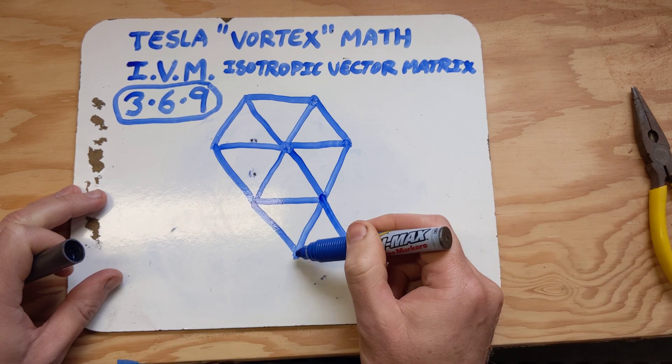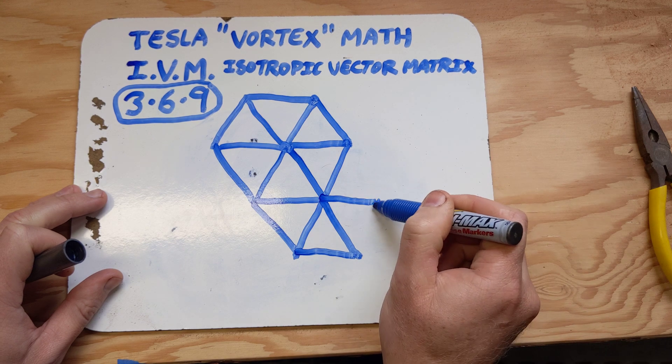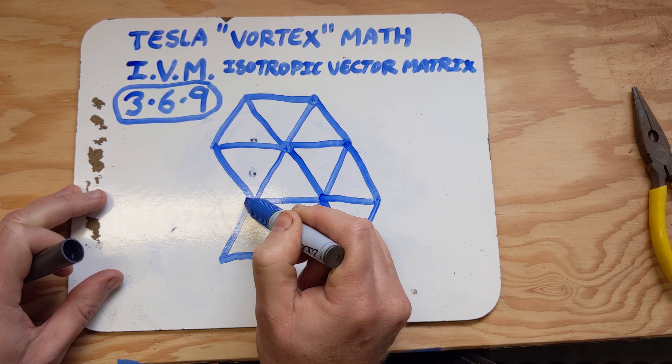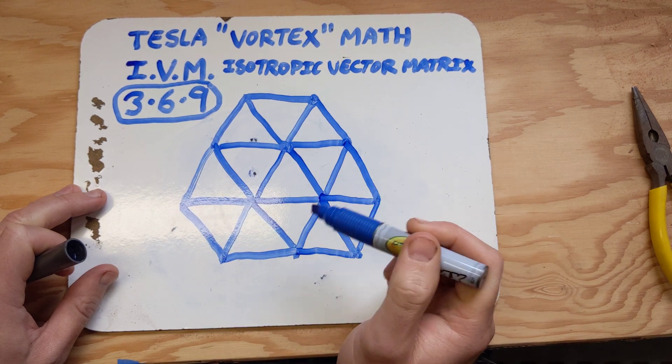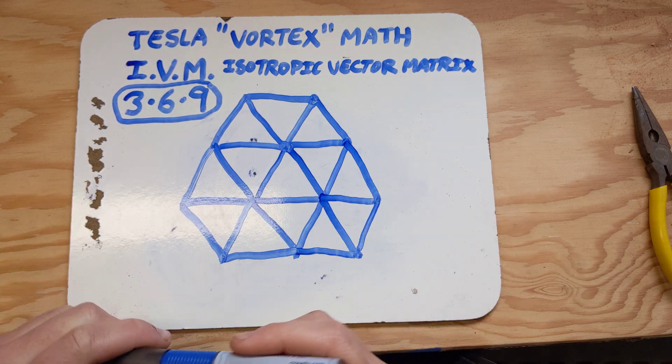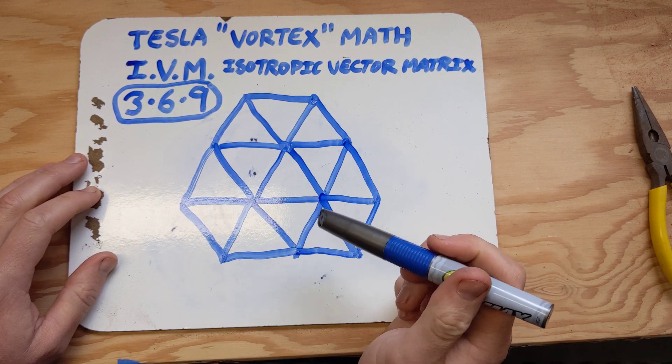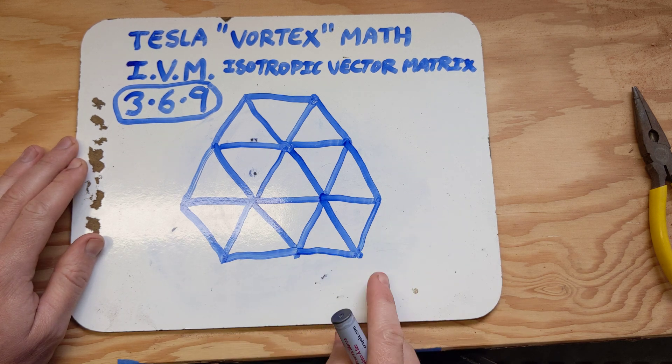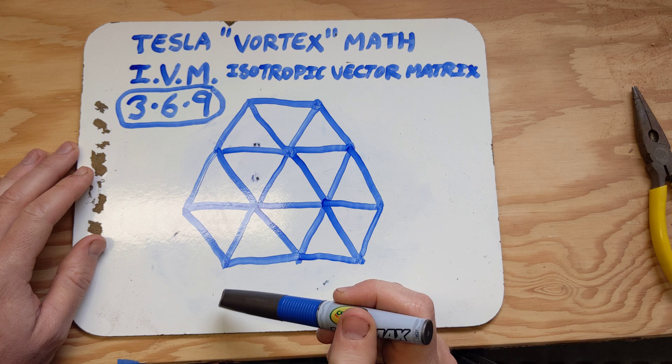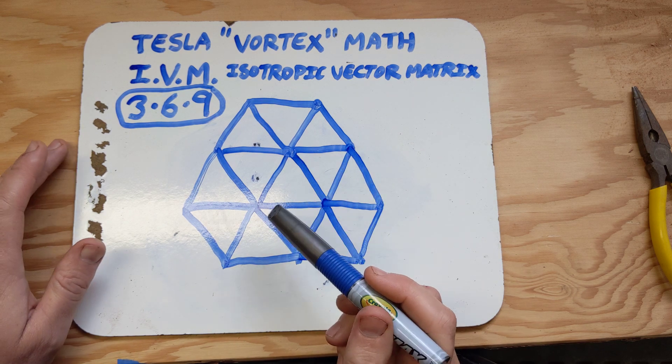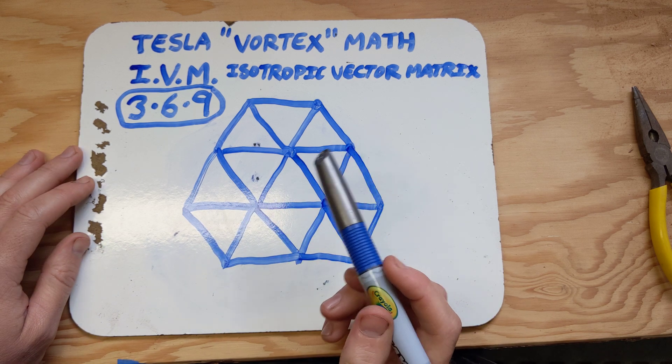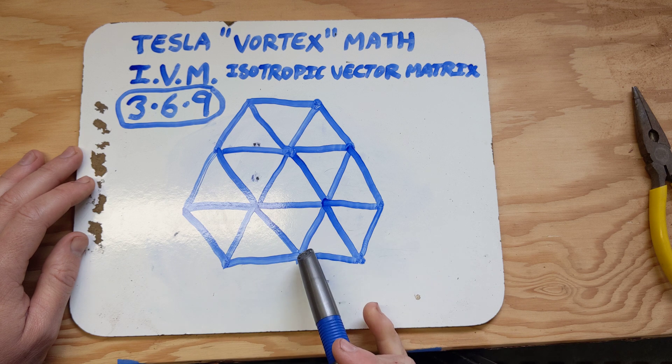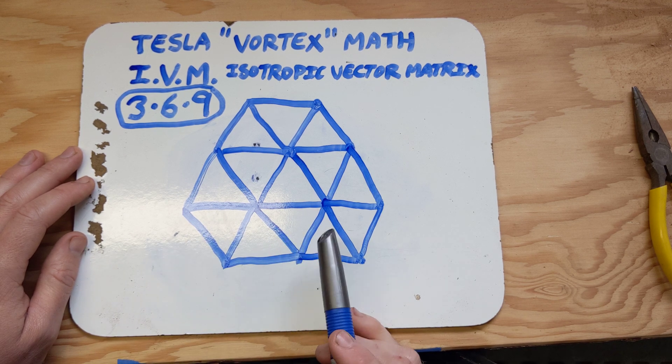And of course, the beauty of this is that the distance between every node or point is exactly the same. And it's also considered to be structurally, mechanically, the most minimal and maximal - minimally in terms of components required and maximally in terms of strength.